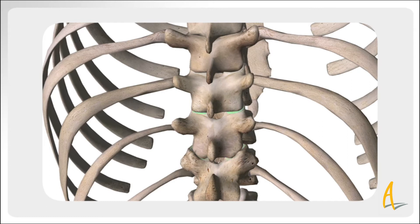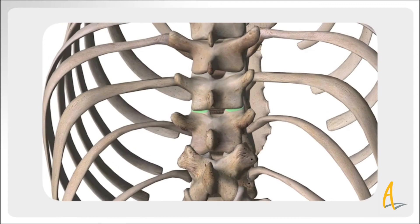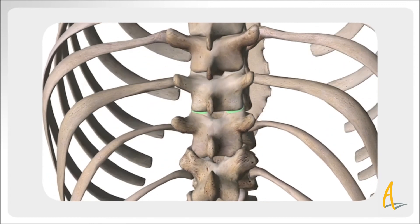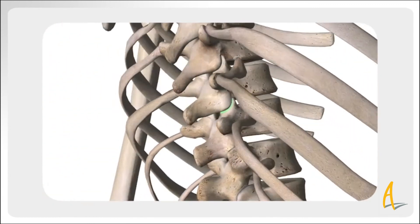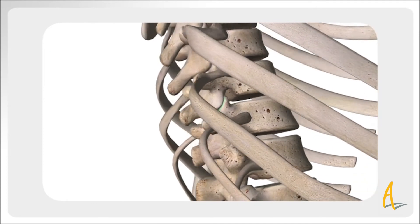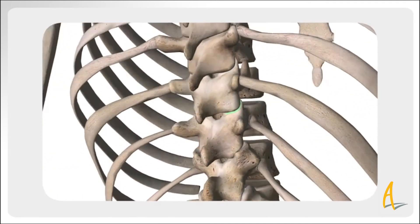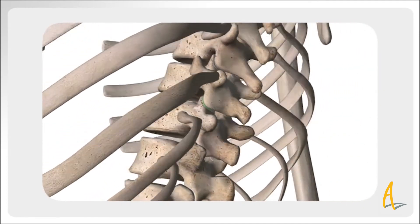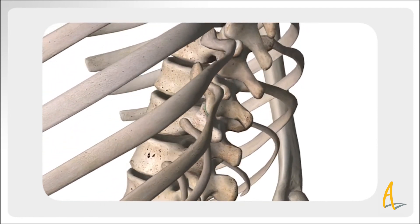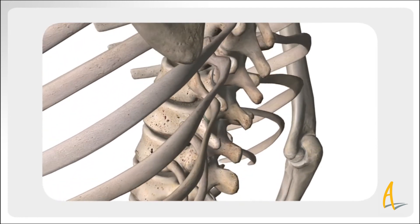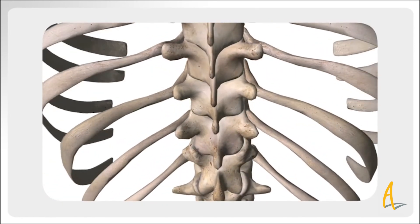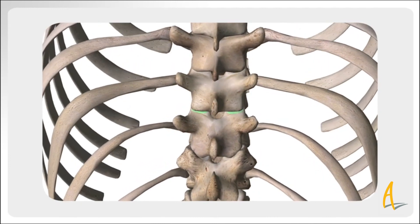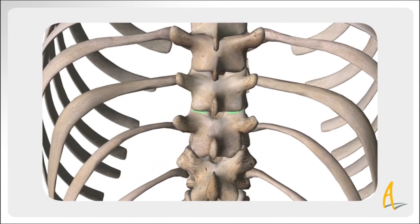Inflammation starts at the edges of the small facet joints between the vertebrae, and as a result of this inflammation, scar tissue forms in the joint between the two bones, making it stiff. The scar tissue may eventually turn into bone and fill the space in the joint. If this happens, the joint becomes fused, which limits movement of the spine.